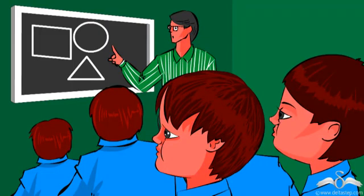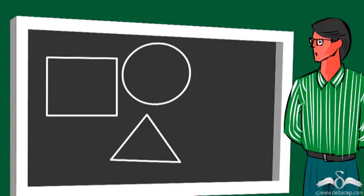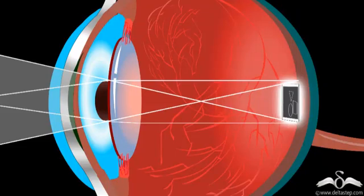Now in case of Paul who had a normal vision when it came to far objects like the blackboard, look at his eye. His lens is relaxed and also his eyeball is of a normal size.